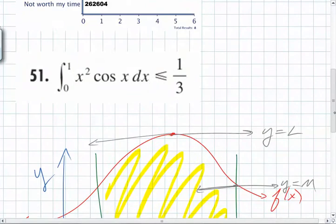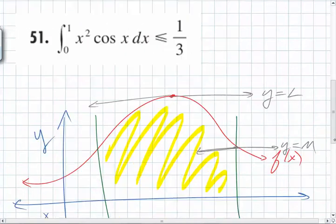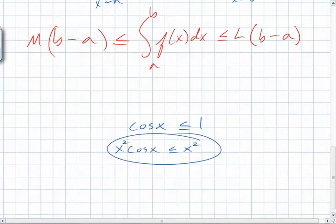Okay, so let's look at this for example. You're going from zero to what? One. Zero to one. So you are integrating from zero to one. Does that help you at all, knowing that x squared cosine x has to be less than or equal to x squared? Yeah. Yeah, it does, because what could we do to each of these?